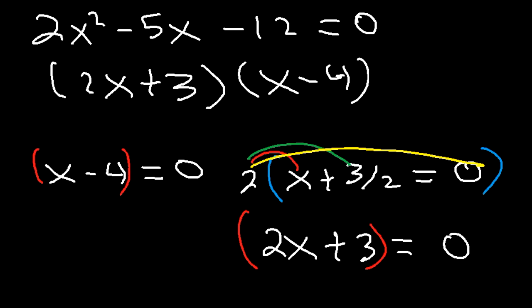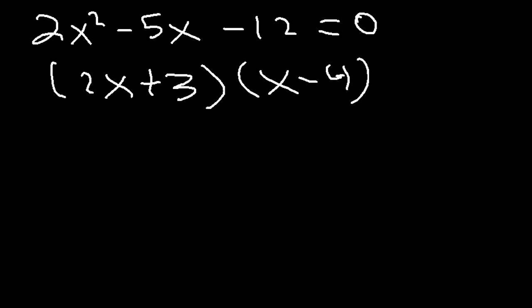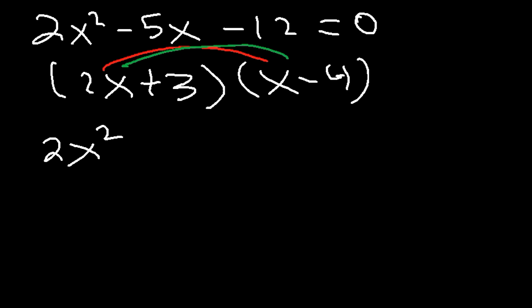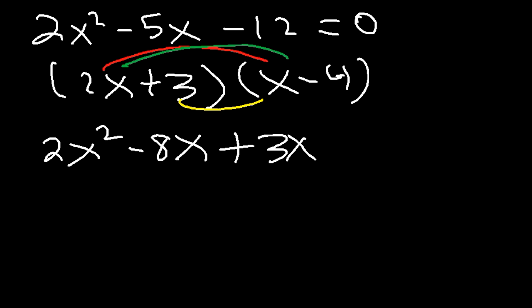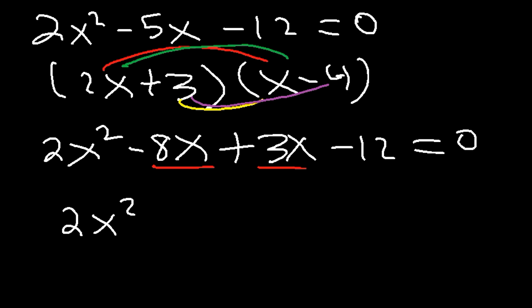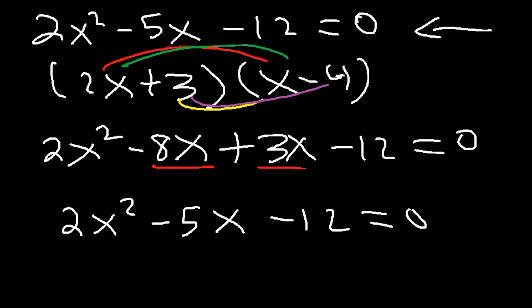Now we can check the work by FOILing it. 2x times x is 2x squared; 2x times negative 4 is negative 8x; 3 times x is 3x; and 3 times negative 4 is negative 12. Adding the two like terms in the middle: negative 8 plus 3 is negative 5. So we do indeed get the original equation. If you ever need to factor a trinomial and have difficulty, you can always use the quadratic formula to factor it.